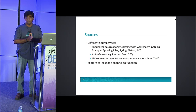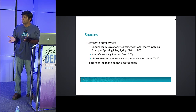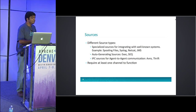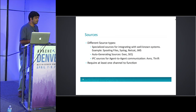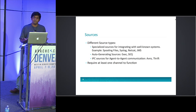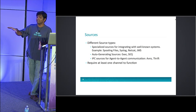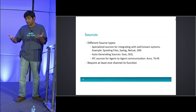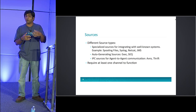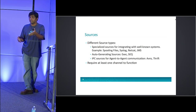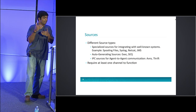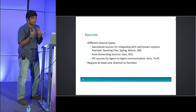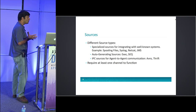We recommend the spooling file source instead of using the exec source with tail -f, for the simple reason that the spooling file source will not lose data even if your agent restarts or your JVM crashes. The reason tail -f doesn't work is that it executes outside of the Flume agent — if the Flume agent fails, tail -f continues running, and when you restart Flume you restart tail -f from a different location, potentially losing data written in between. Spooling file source is a more reliable way of doing this.